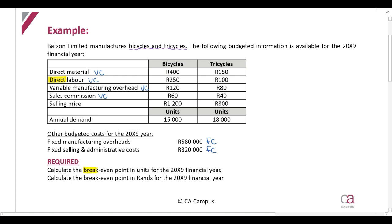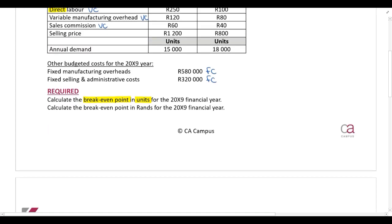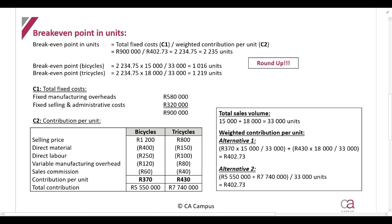First we are going to calculate the break-even point in units for the 20x9 financial year. I recommend always starting by writing out the formula, because once you have the formula you'll see what other calculations are necessary. To calculate the break-even point in units, we take total fixed costs and divide by the contribution per unit. However, since we're dealing with two different products, we need to divide by a weighted contribution per unit.